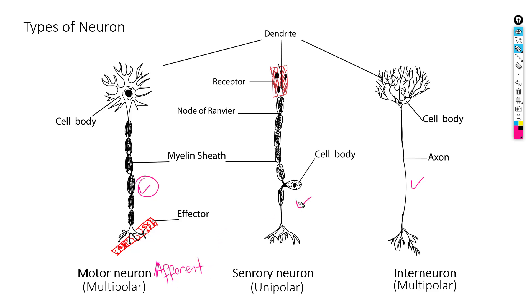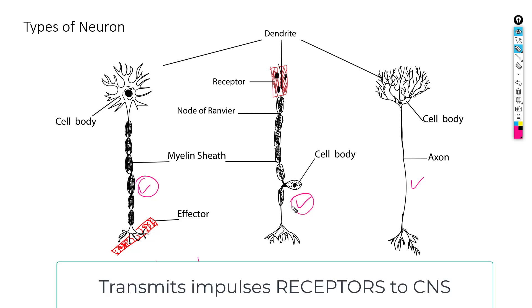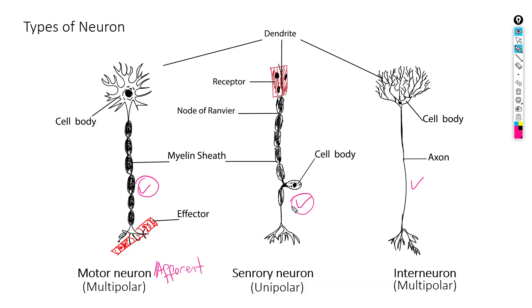And the next one, the sensory neuron, is transmitting impulses from receptors to central nerve system. And this is called afferent neurons.